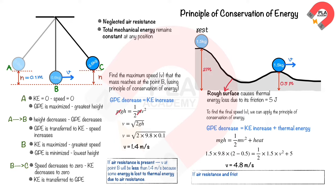If air resistance and friction are ignored, the speed v will be greater than 4.8 m/s, because there will be no thermal energy lost due to air resistance.